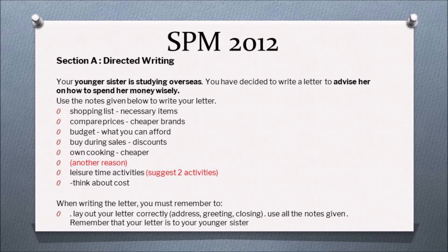The notes given are: Shopping list — necessary items; compare prices — cheaper brands; budget — what you can afford; buy during sales — discounts; own cooking — cheaper; another reason; leisure time activities — suggest two activities; think about cost. When writing the letter, you must remember to lay out your letter correctly: address, greeting, and closing. Use all the notes given. Remember that your letter is to your younger sister.